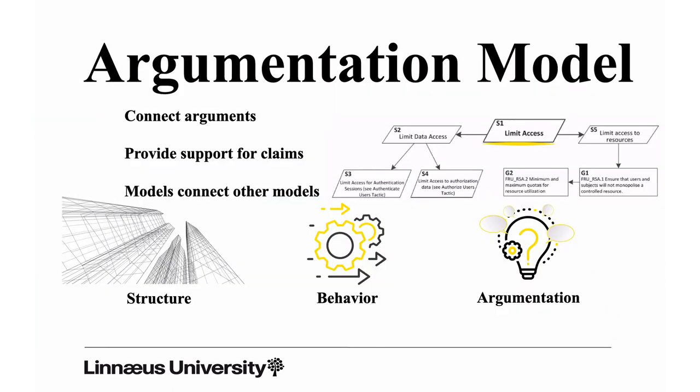The third type is a pure argumentation model. What you see here is a model where you can connect different arguments, different activities, different artifacts that you have developed in order to address a certain concern. This can be used to decompose your argumentation. If we look at the diagram on the right-hand side, you can see that S1 is to limit access. There are some decisions needed in order to limit the access to a system, and that is divided up into two aspects.